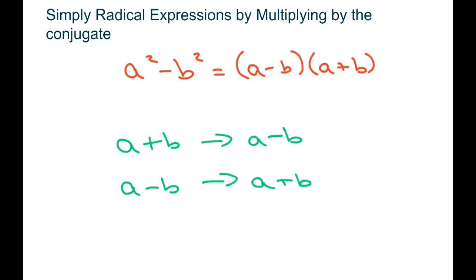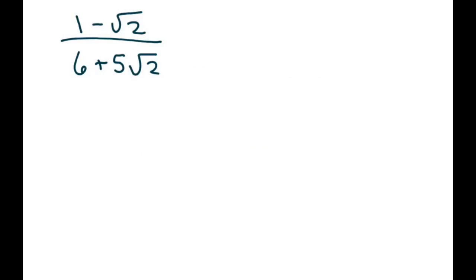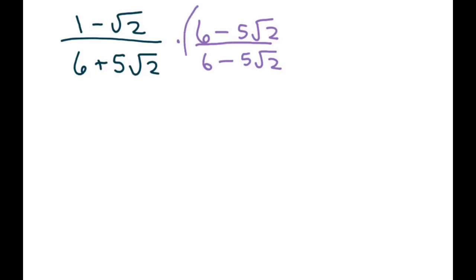We're going to multiply by the conjugate because when you square them, it gets rid of the radical. We're going to start with the first example, which is actually one of our harder examples, and we have 5 total. We always use the denominator because we don't want radicals in the denominator. So we're going to multiply the denominator by 6 minus 5 square root of 2. If we multiply the denominator by that, we also have to multiply the numerator by that, because this whole thing equals 1 — so we're just simplifying and not changing the value.